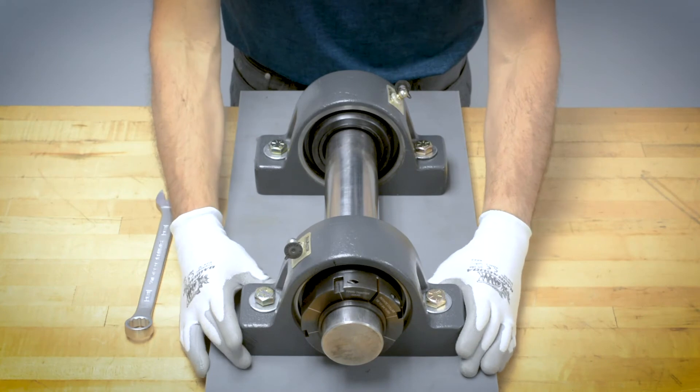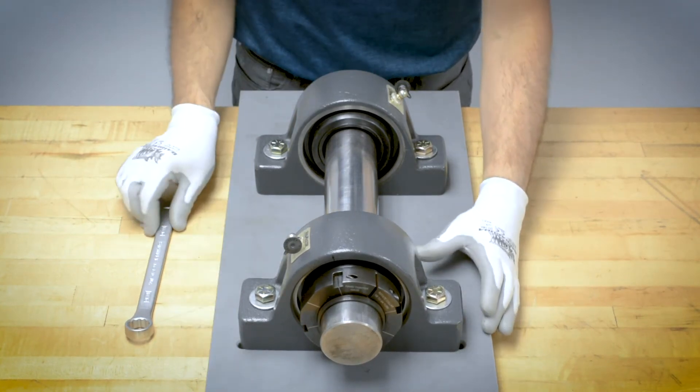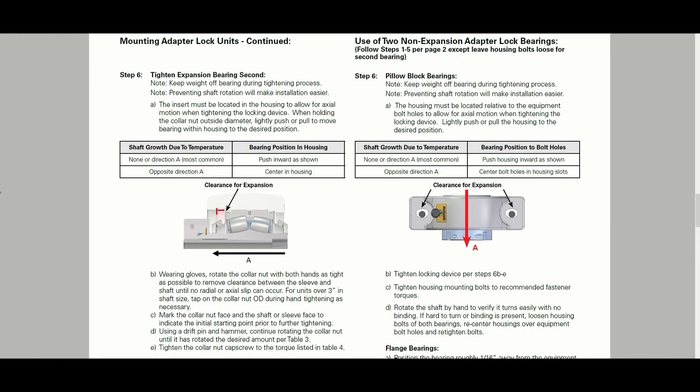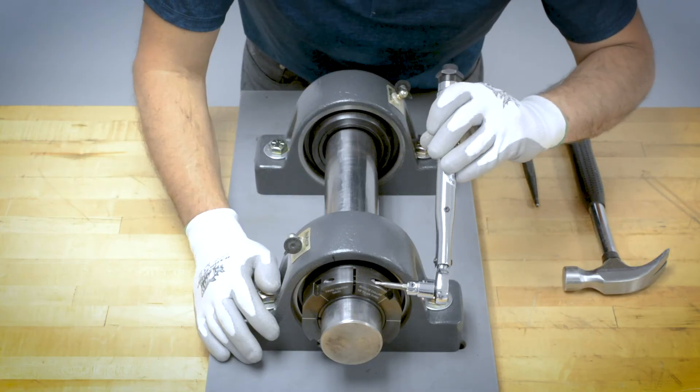In certain applications, it may be desired to use two non-expansion clamp lock adapter lock bearings. Refer to the instructions for recommendations to avoid preloading the bearing when installing two non-expansion bearings.